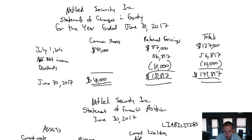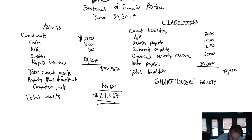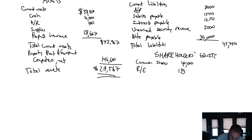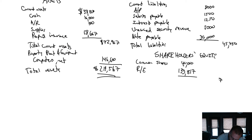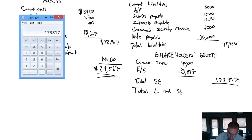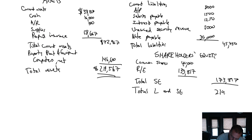Our shareholders' equity consists of common shares 40,000 and retained earnings 133,817. So 40,000 plus 133,817 is 173,817. Our grand total — total liabilities and shareholders' equity — is 45,750 plus 173,817, which equals 219,567.